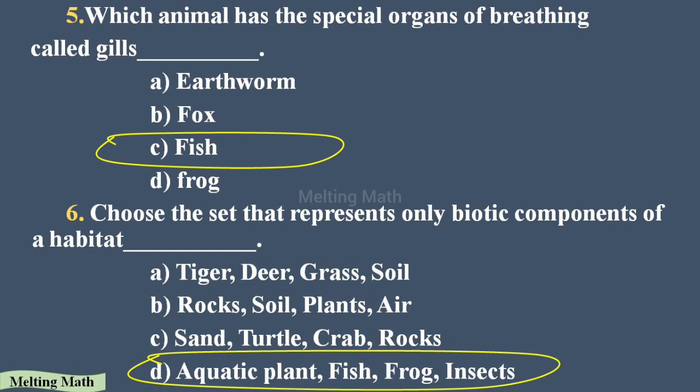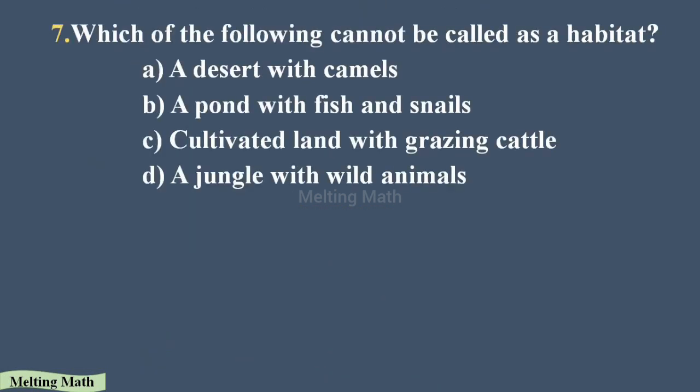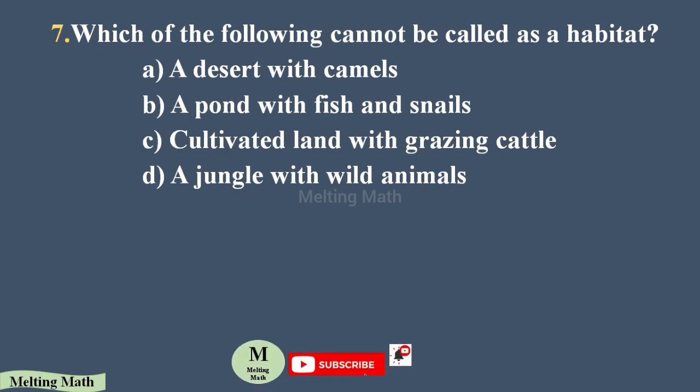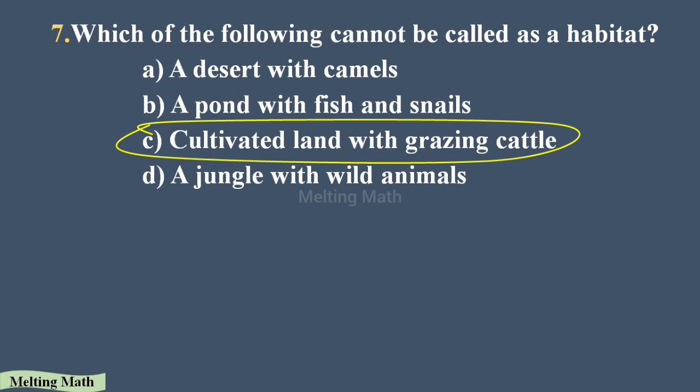Question seven: which of the following cannot be called a habitat? Options are a desert with camels, a pond with fish and snails, cultivated land with grazing cattle, and a jungle with wild animals. Option C cannot be called a habitat because cultivated land with grazing cattle does not come under a natural habitat. So option C is the correct answer.